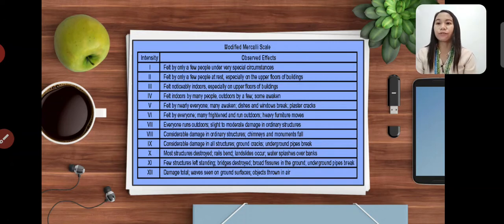Intensity 4, felt indoors by many people, outdoors by a few, some may awaken. Intensity 5, felt by nearly everyone, many awaken, dishes and windows break, plaster cracks. Intensity 6, felt by everyone, many frightened and run outdoors, heavy furniture moves.